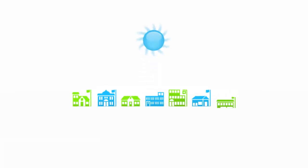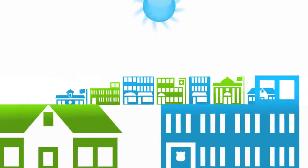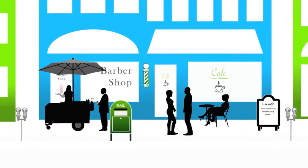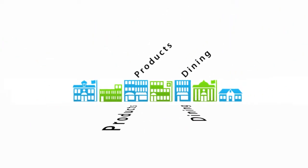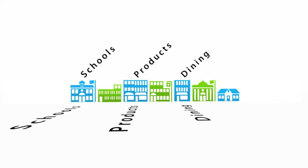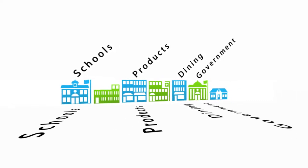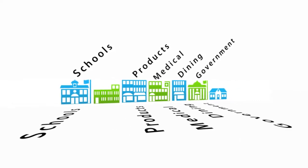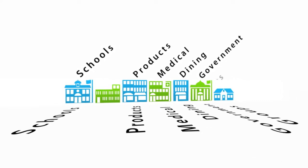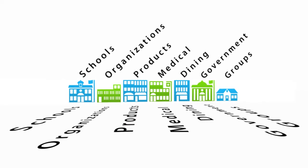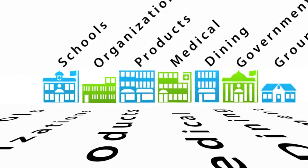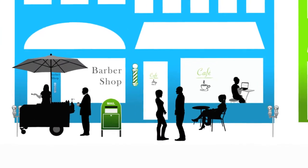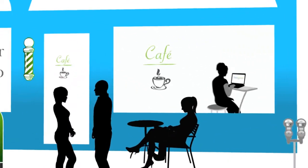Every community has the same basic components: people, products and services, dining, schools, government, medical resources, civic groups and other community organizations. Every community has them. The question is, how do you connect them?